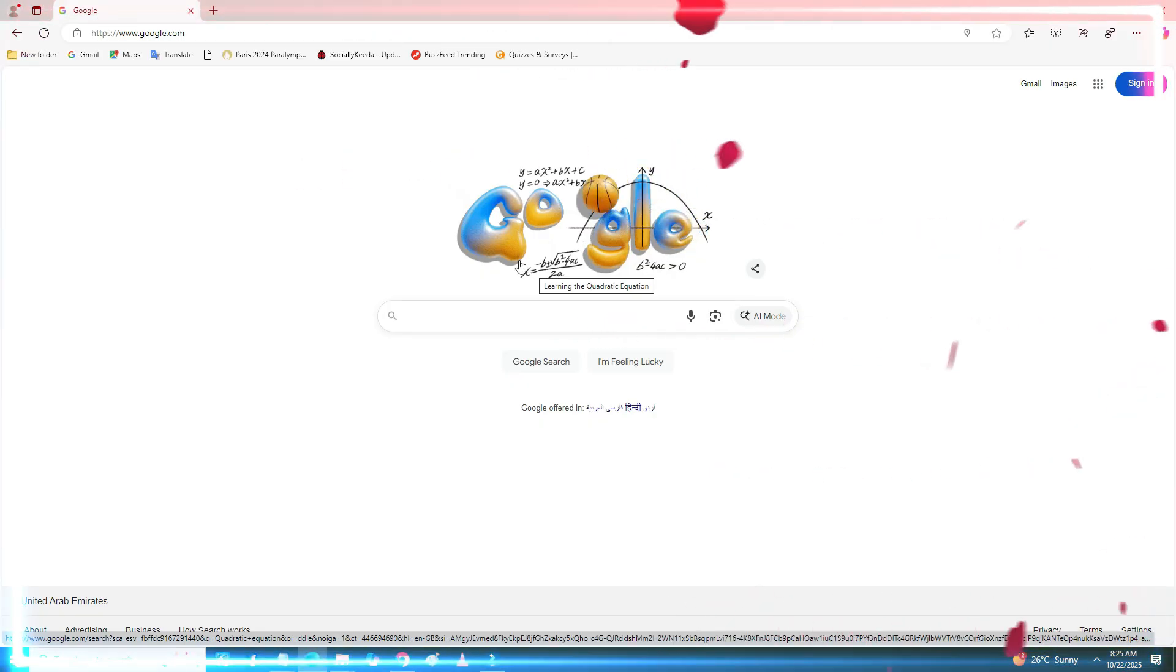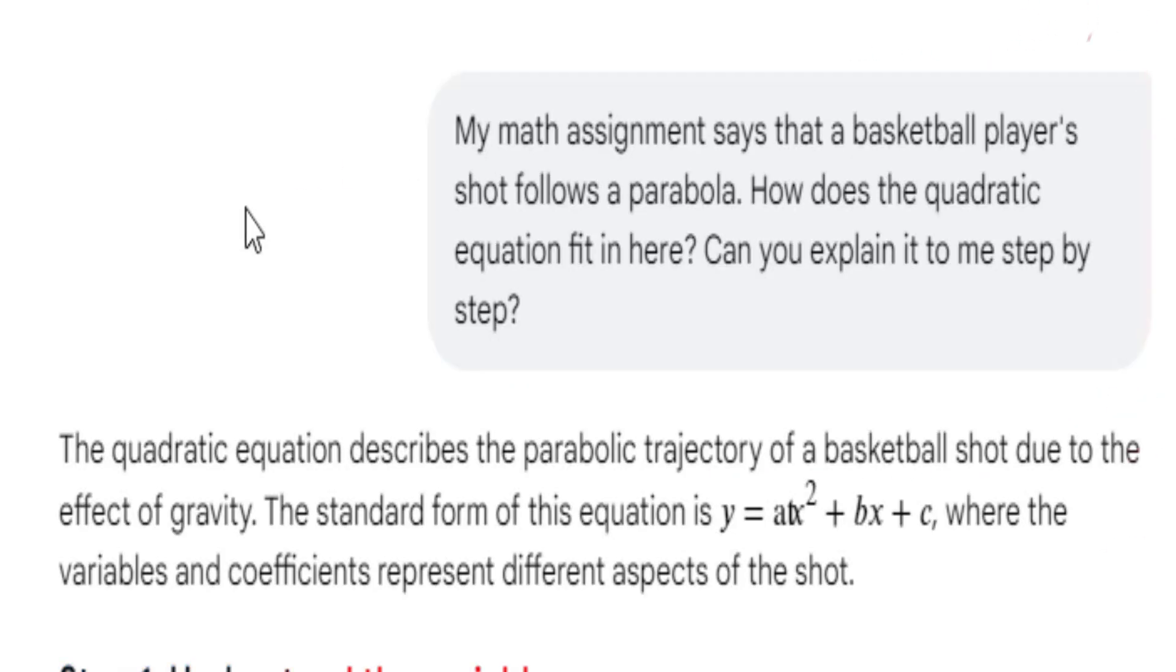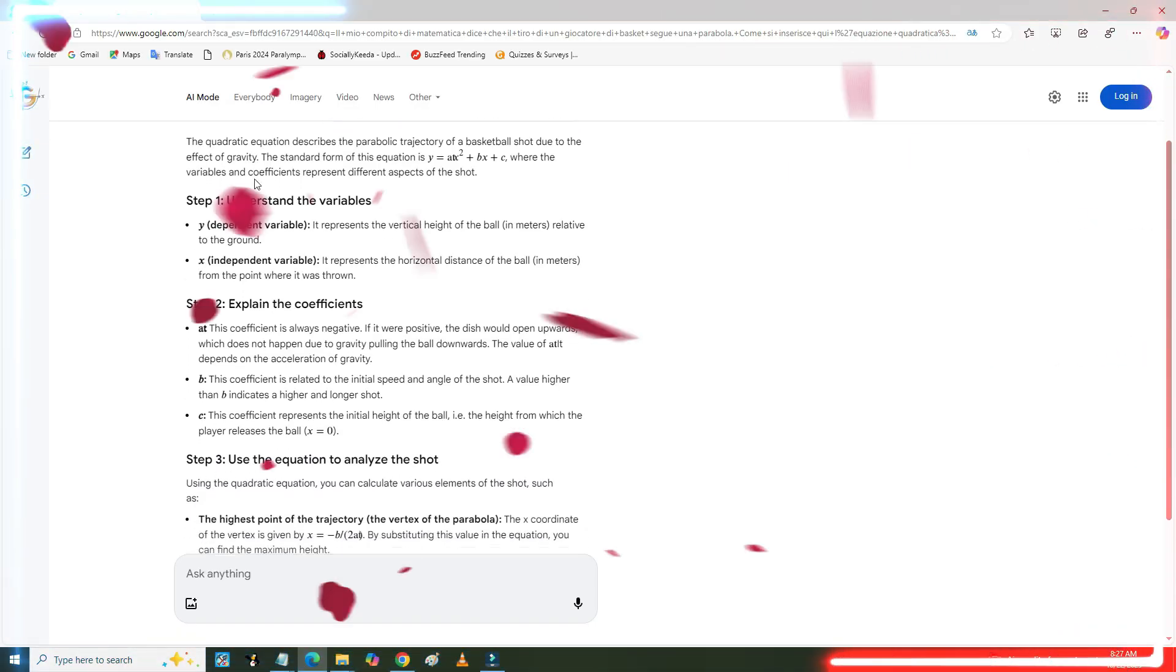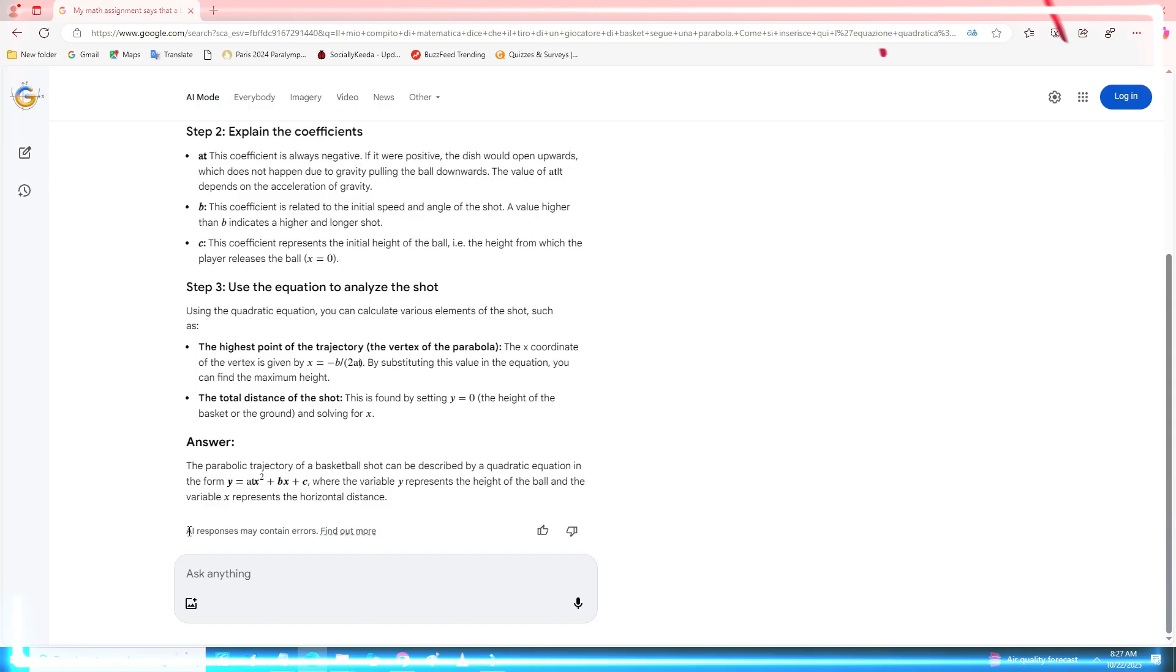For example, on clicking quadratic equation Google Doodle, asked a question: My math homework says that a basketball player's shot follows a parabola. How does the quadratic equation fit in here? Can you walk me through it?